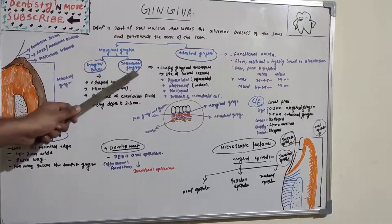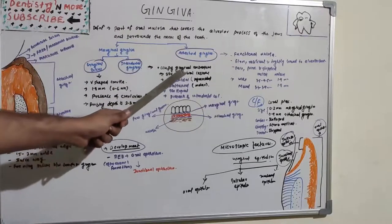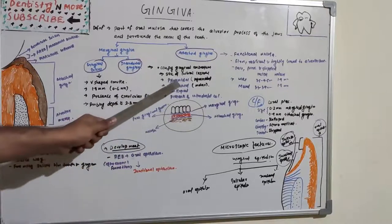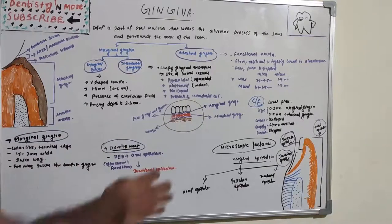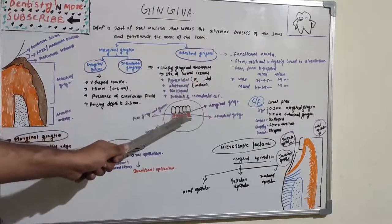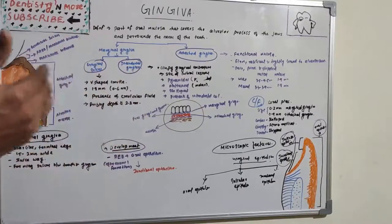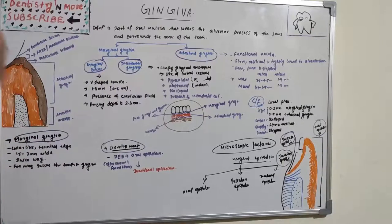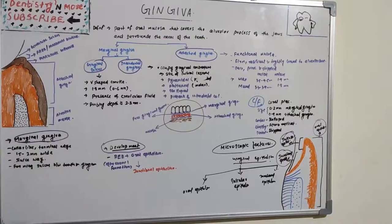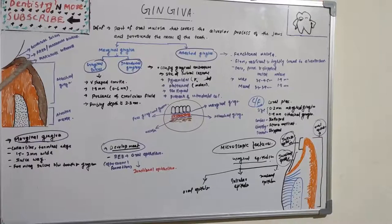Next we have interdental gingiva, which is between the two teeth. It occupies the gingival embrasure, which is the site of initial lesions. It is pyramidal in the anterior region and flattened in the posterior region, with a scalloped presence and an interdental col. There is a valley space known as the col between the anterior and posterior regions. Marginal gingiva is a collar-like terminal edge which is free to move, 1.5 to 2 mm wide, acting as a sluiceway in mastication and forming a sulcus between tooth and gingiva.